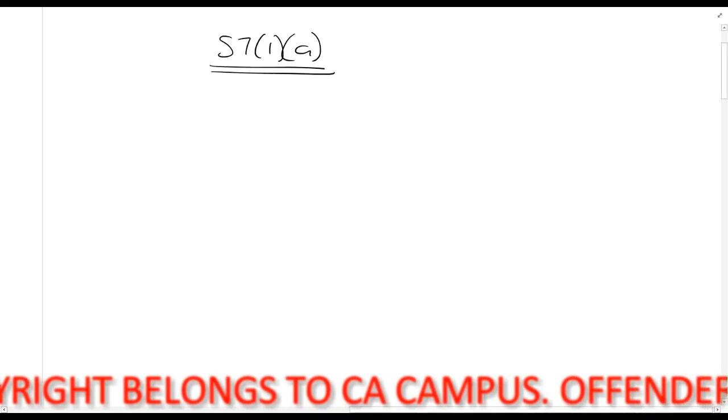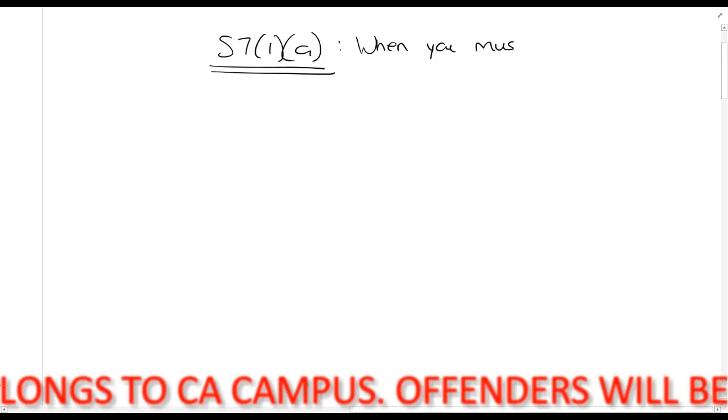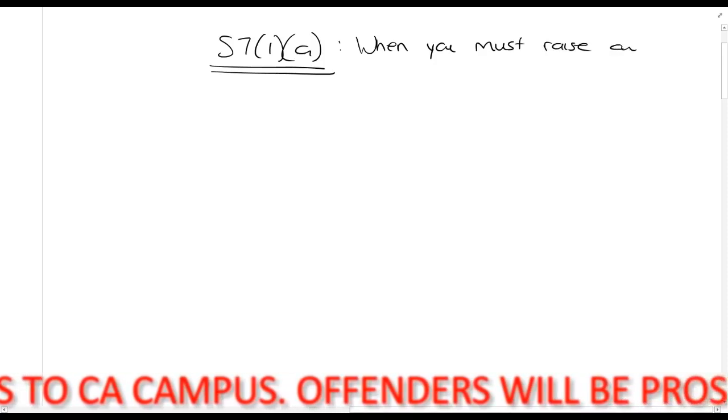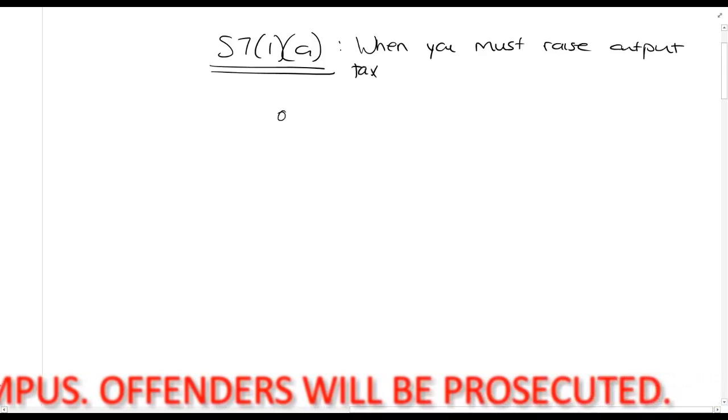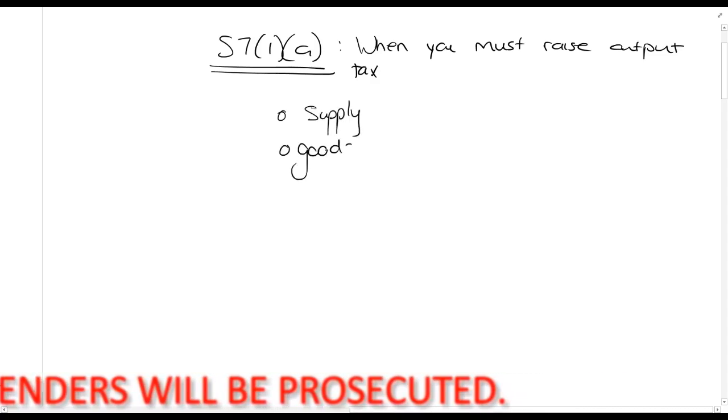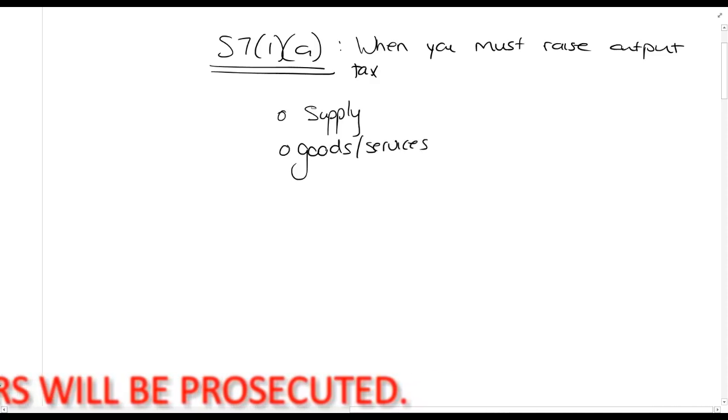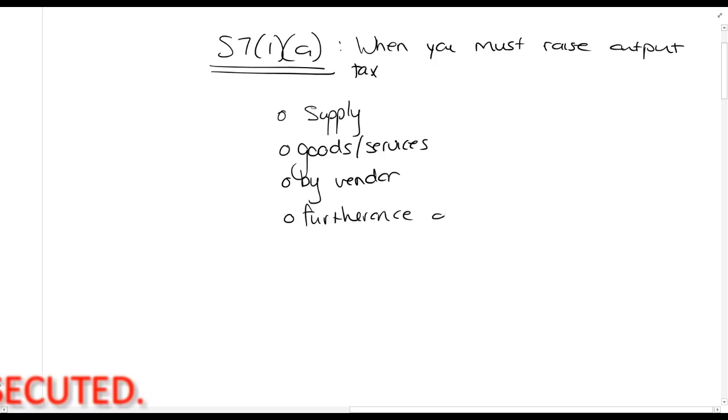Can you remember section 7.1a? This is the section that tells us when you must raise output tax. Section 7.1a says when there's a supply of goods or services by a vendor in the furtherance of an enterprise. So all of those requirements must be there.